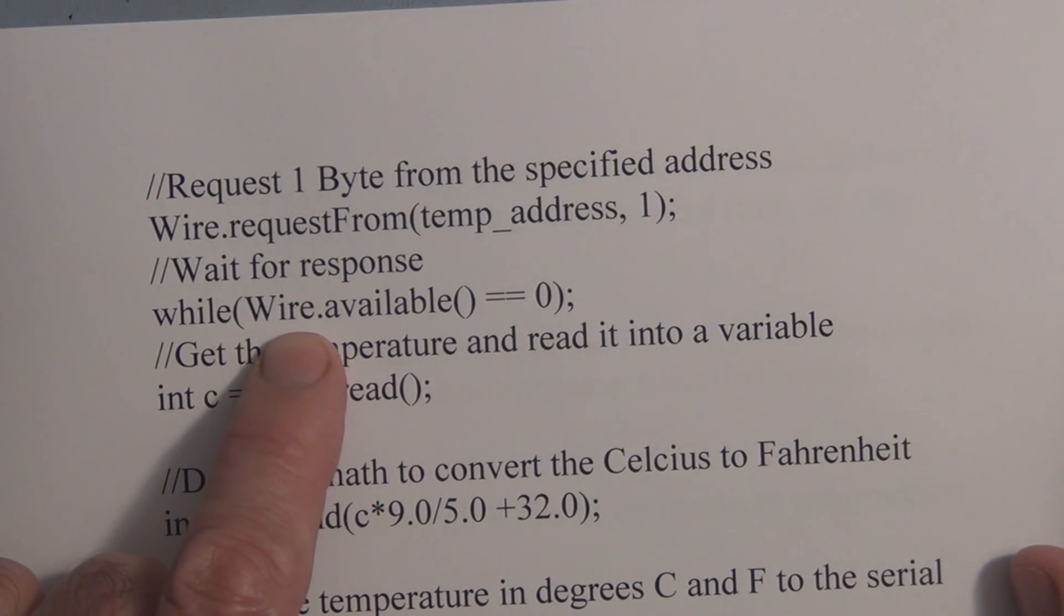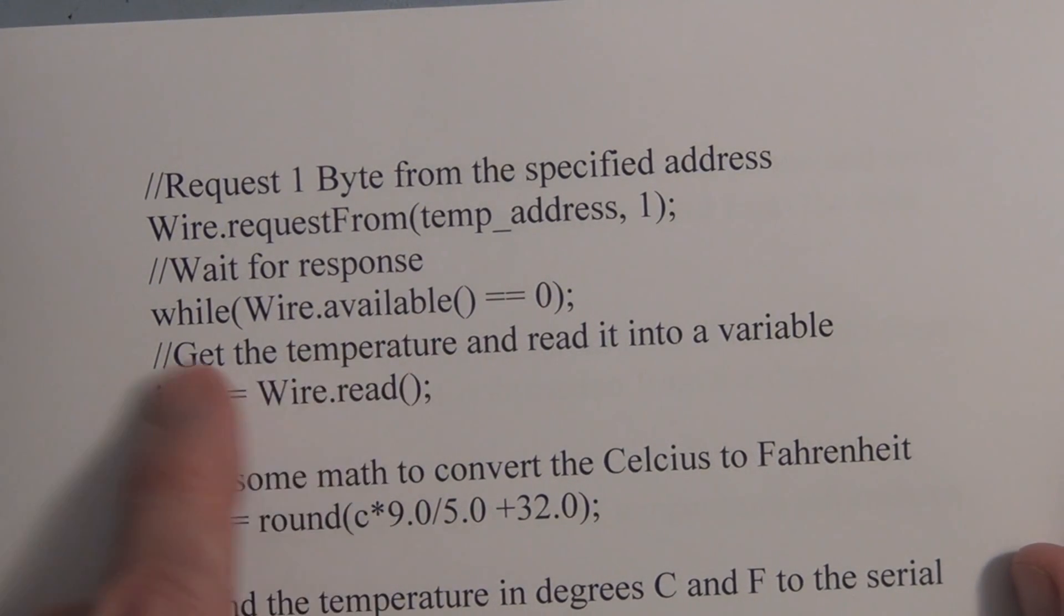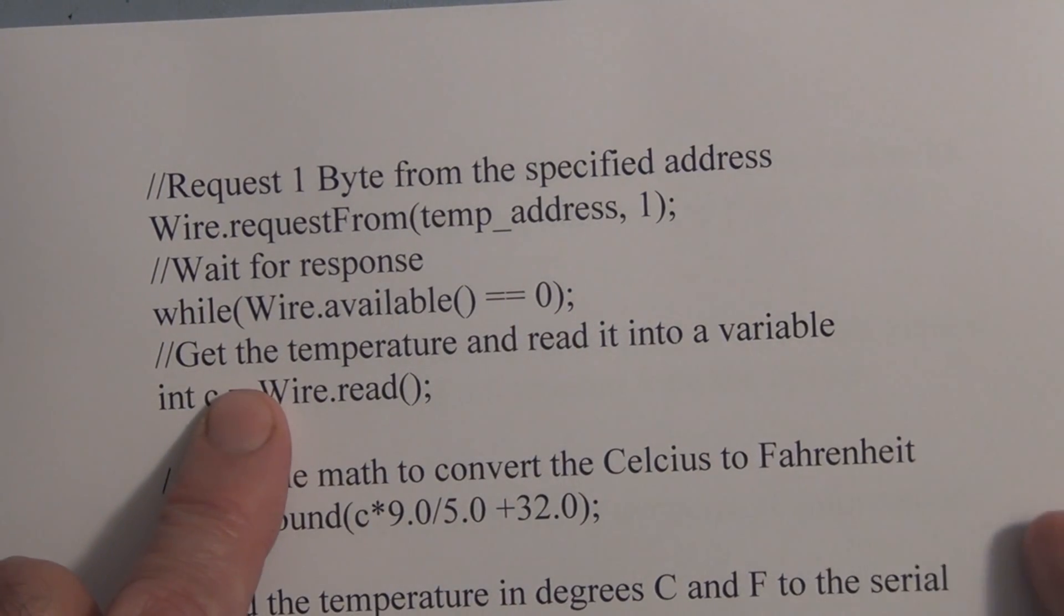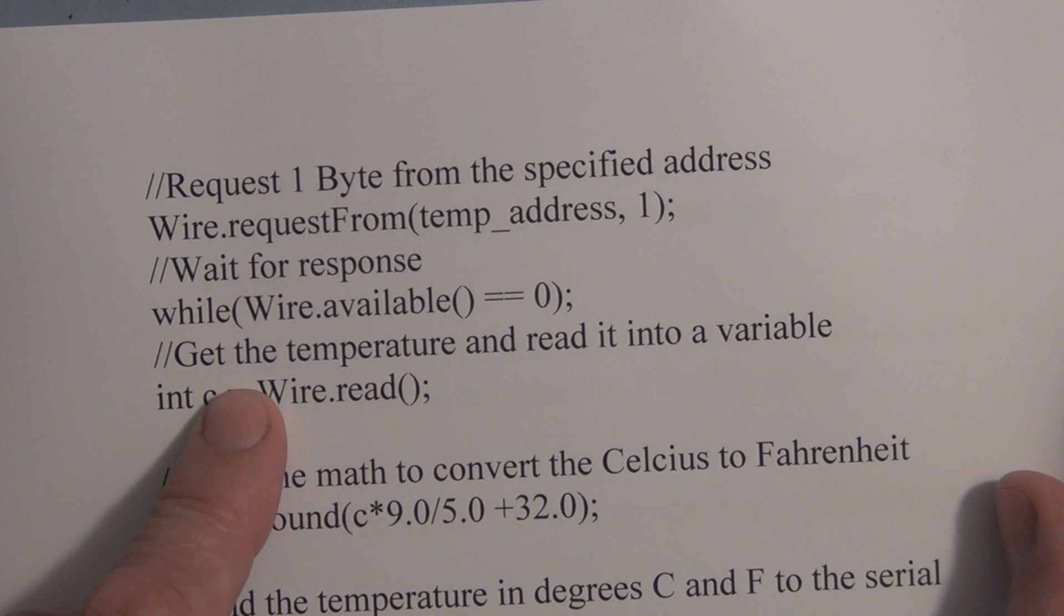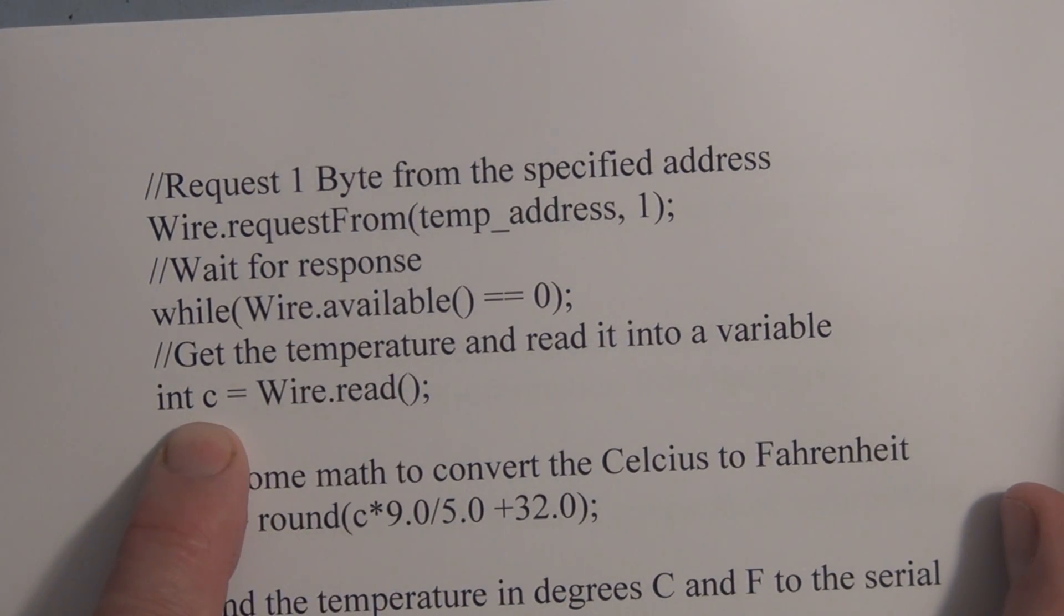There's also a function called wire dot available, and that is setting up the slave. We're waiting for the information to receive, for the microcontroller to receive the information from the slave before we continue with the rest of the program. So while wire dot available is zero, we're going to read that information because it takes time to go to the Arduino. And we're going to use a wire dot read and read the information into integer variable C.